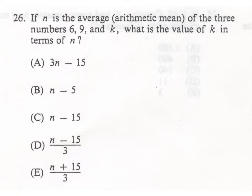If n is the average arithmetic mean - they're trying to make it sound complicated by saying arithmetic mean, it's just the average - so let's just get rid of that so you don't get silly. Of the three numbers 6, 9, and k, so those are important. So it was the average of 6, 9, and k, what is the value of k in terms of n?